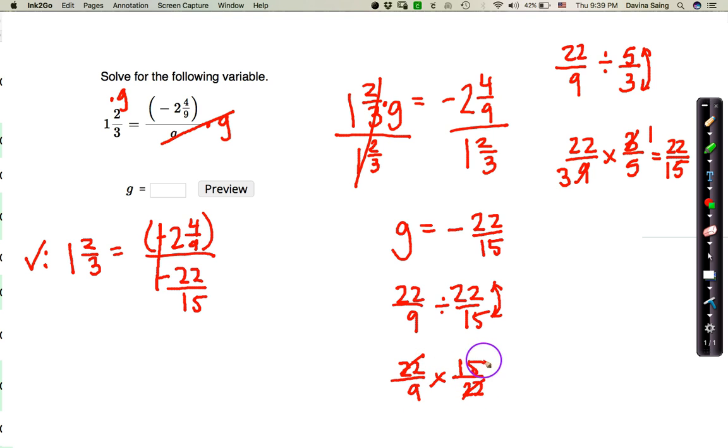These are going to cross-cancel. Here, between 9 and 15, I can divide by 3. 15 divided by 3 is 5. 9 divided by 3 is 3, which is going to give me 5 thirds. So here, I have 5 thirds. That's what I got here.